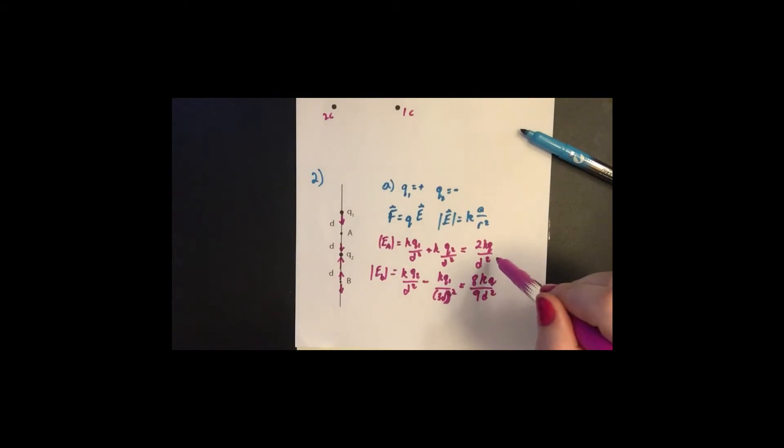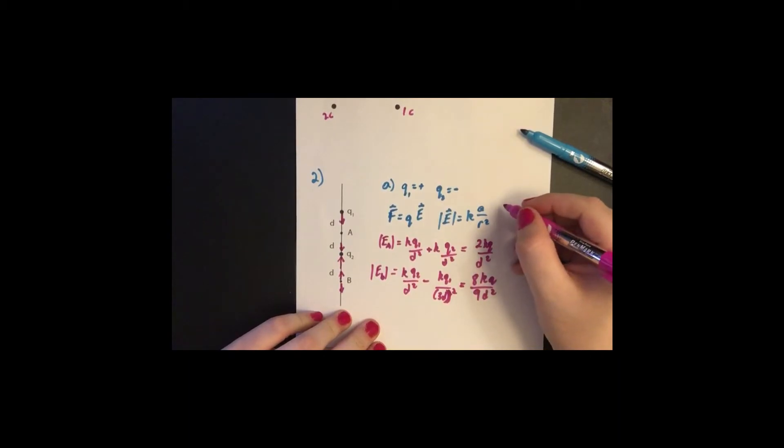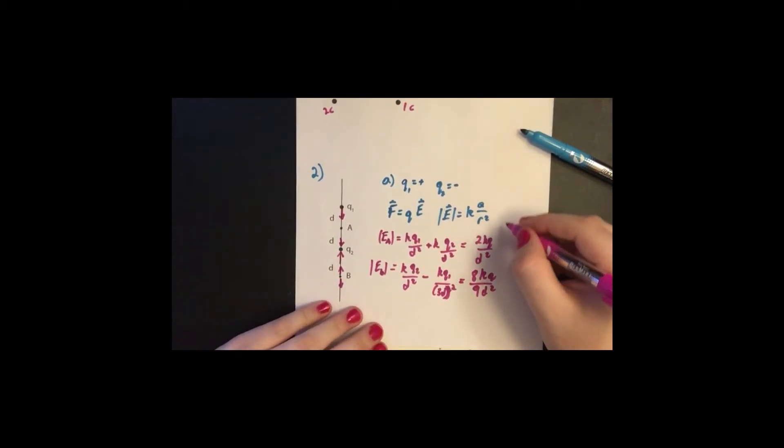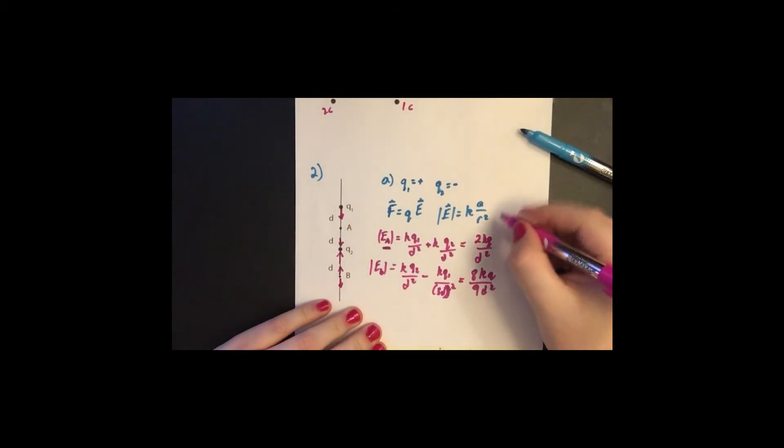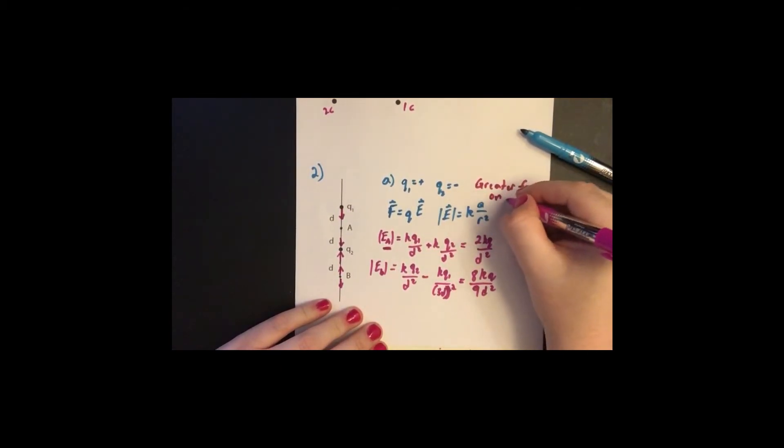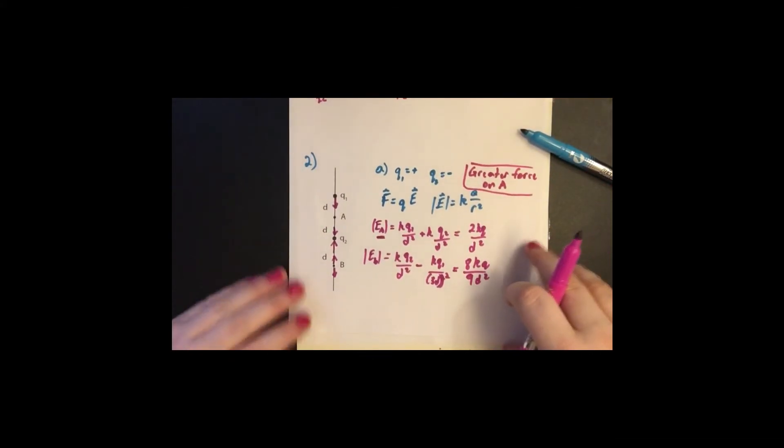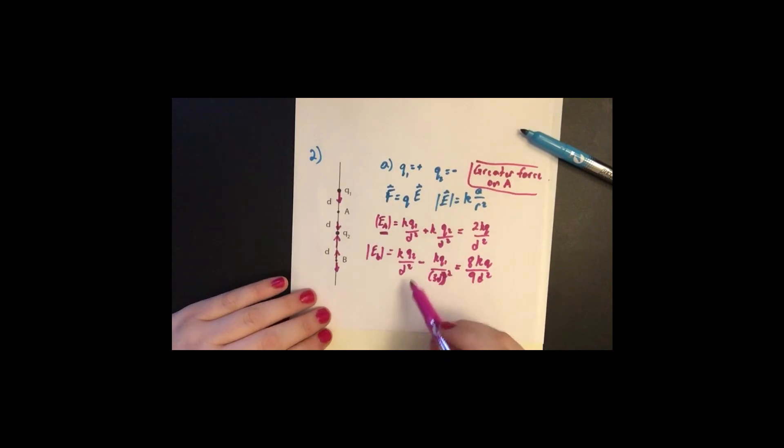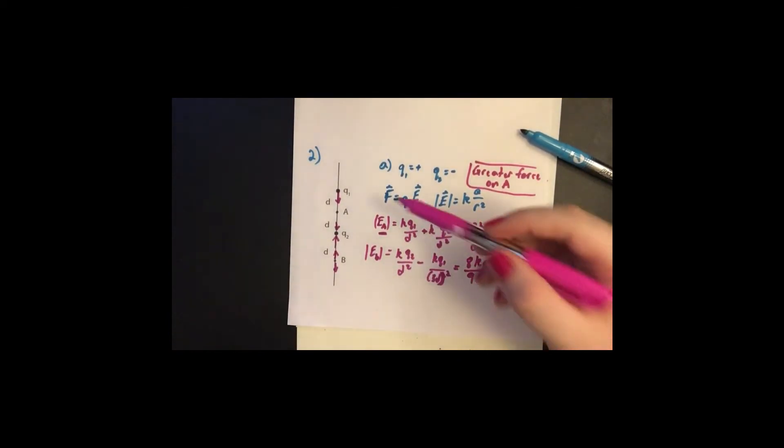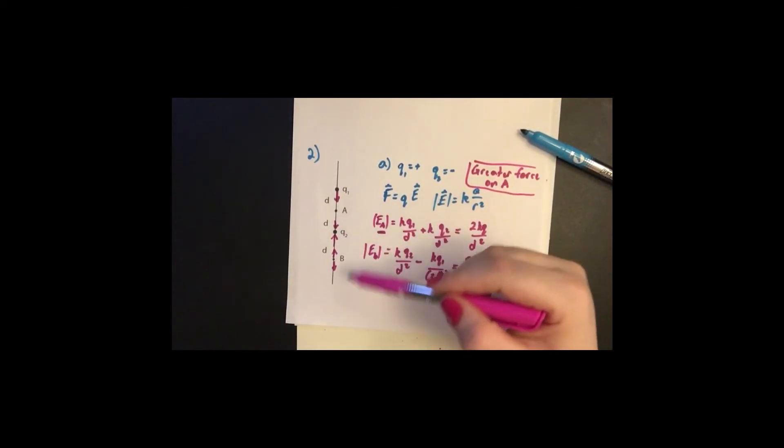And so when we multiply that by the test charge, EA is going to be bigger than EB. So our greater force is when we're acting on A. So greater force is on A. And once again, we pick these directions, whether positive or negative, depending on which direction the field is going at that point.